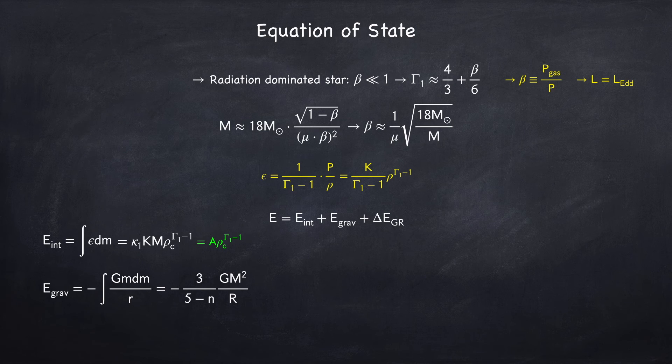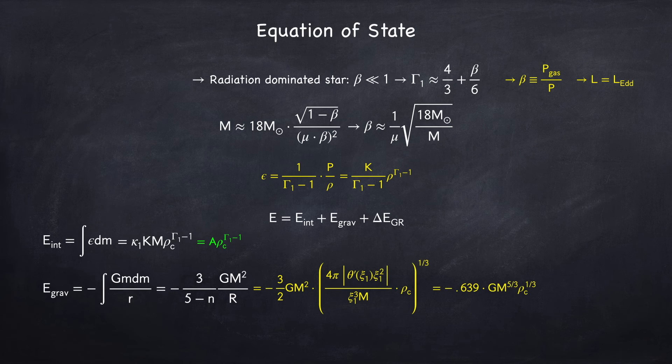We can rewrite the radius in terms of the mass and the density to get that the gravitational potential energy will be negative of some constant b times the central density to the one-third. These functions theta and xi are taken from a polytrope profile. If you don't know what they are you can watch my video on polytropes, Stellar Physics 3b. For the purposes of this video, this entire factor is just a number.